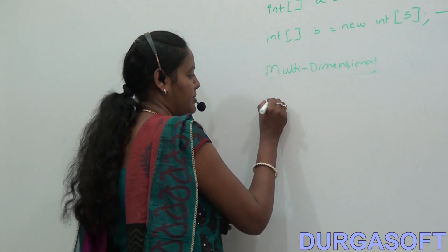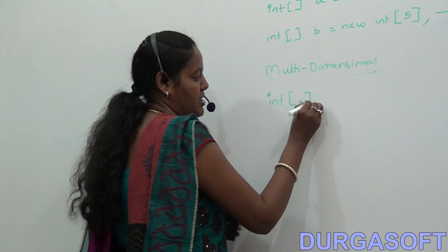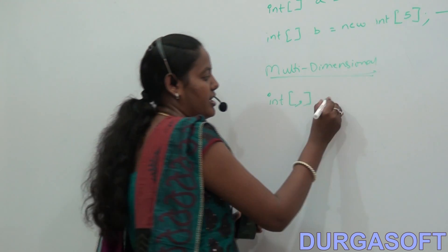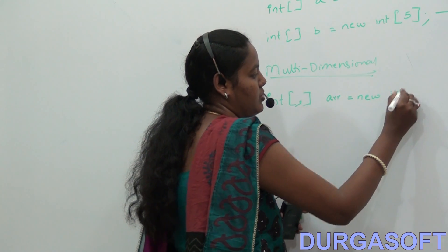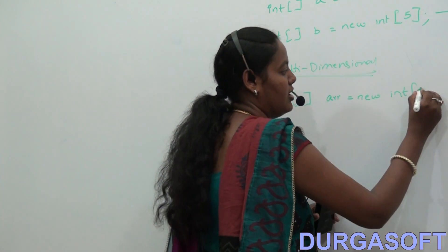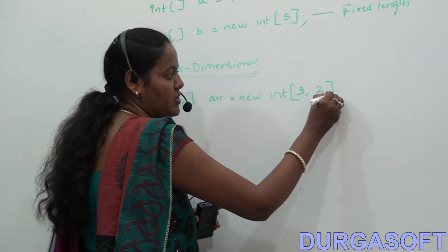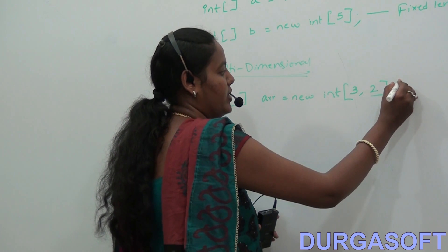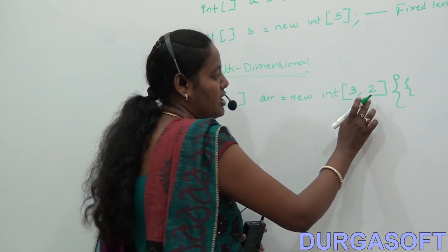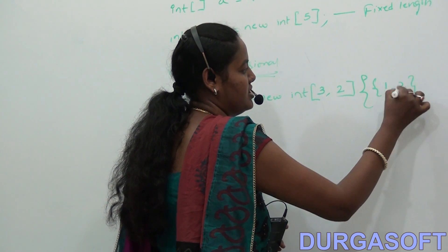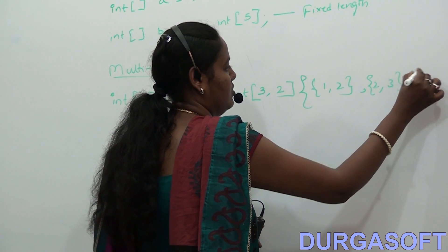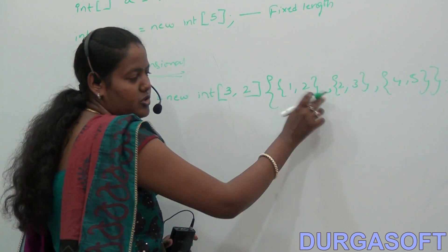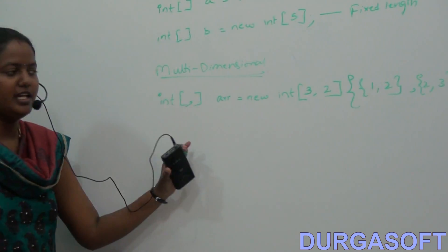For a multidimensional array, you use a comma inside the brackets to indicate dimensions — the comma signals it is a multidimensional array. You write: array name equals new int, and specify size as rows comma columns, for example 3,2 for 3 rows and 2 columns. If you mention the size it is fixed length; if not, it is dynamic. You can directly assign values — for example, 3 rows and 2 columns with elements grouped per row. That is a multidimensional array.